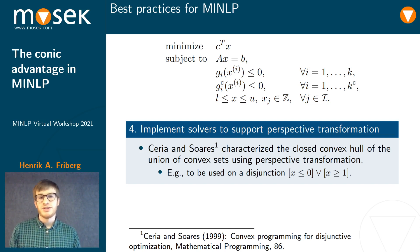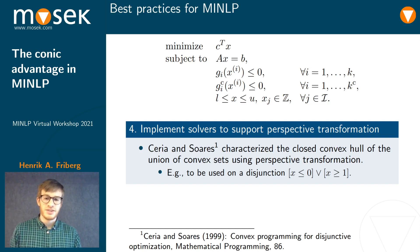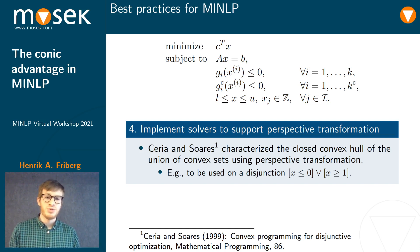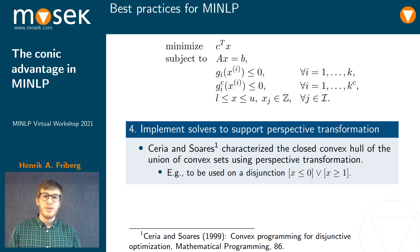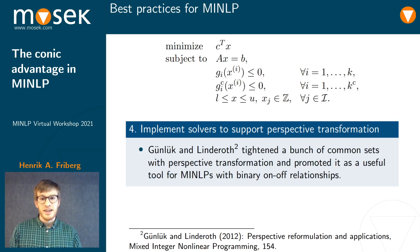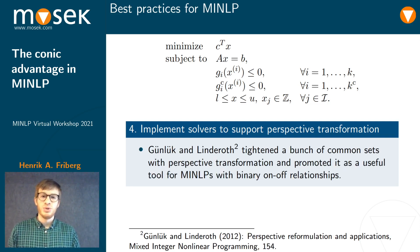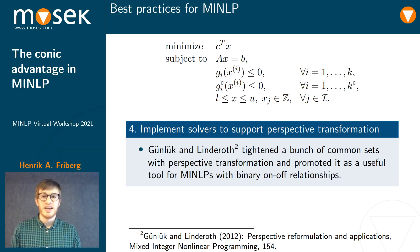Ceria Serauris characterizes the closed convex hull of the union of convex sets using this perspective transformation. If you have integer variables, you have unions of convex sets and you may need the perspective transformation. If you're interested in this, I recommend you look into Günlük and Linderoth, who used it to tighten a bunch of commonly appearing sets and generally recommend it as a useful tool.